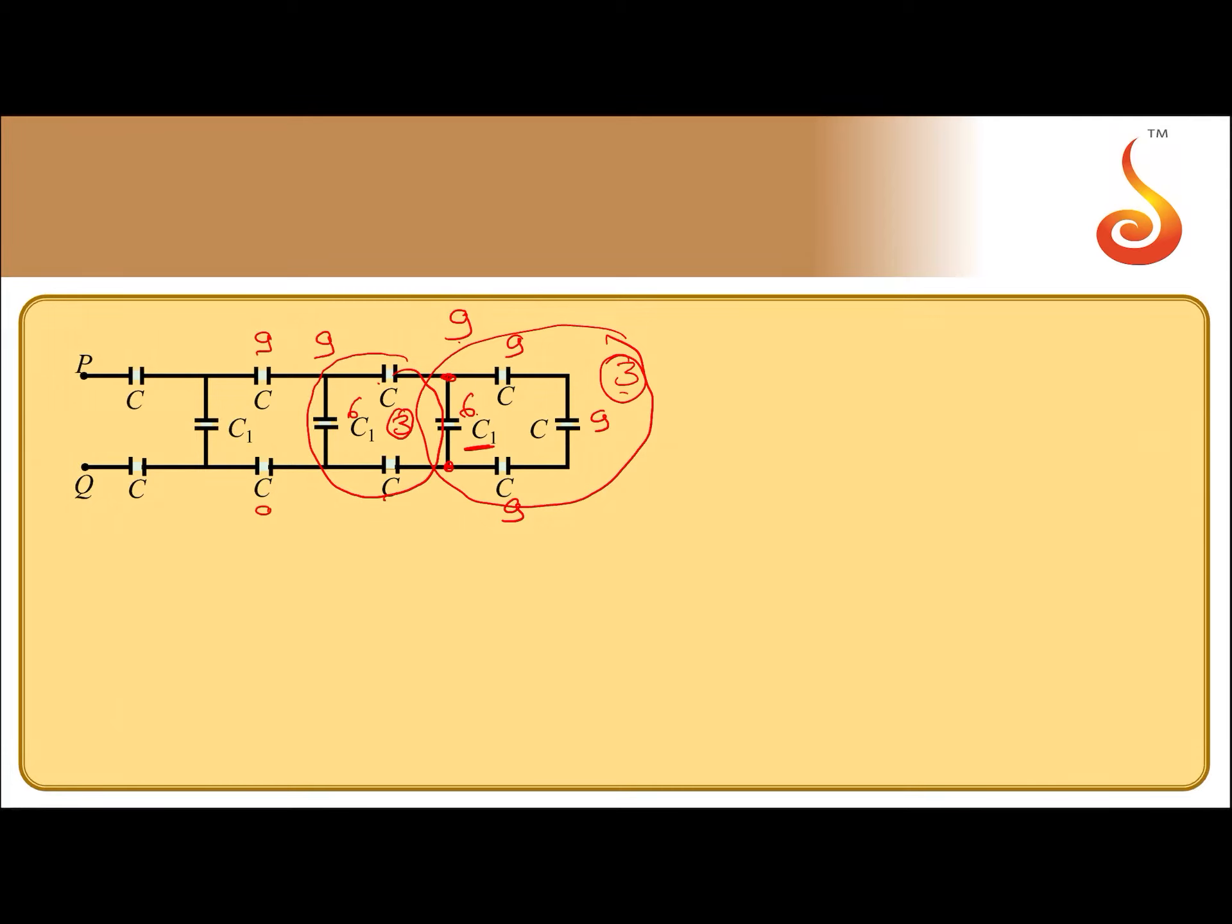Again 9, 9, 9 are in series, effective will be 3. 3 is in parallel with 6. So, effective will be again 9. So, this entire thing put together is 9.